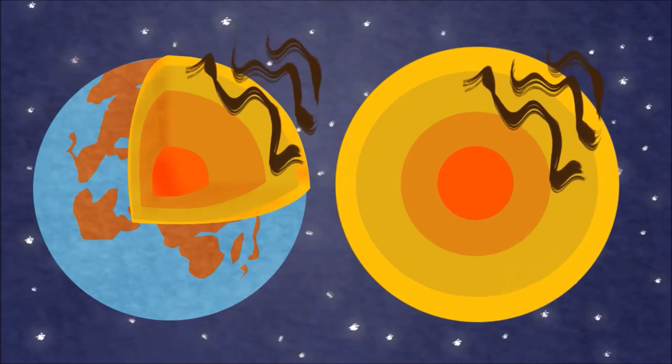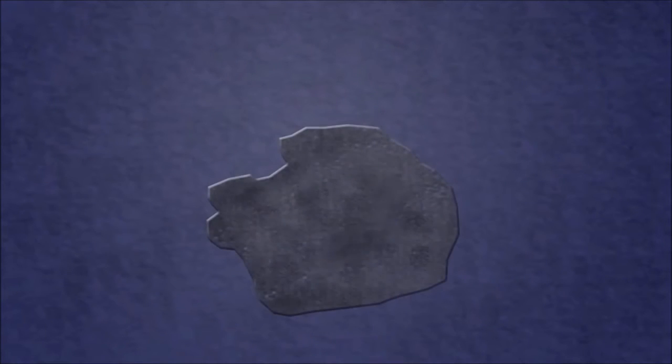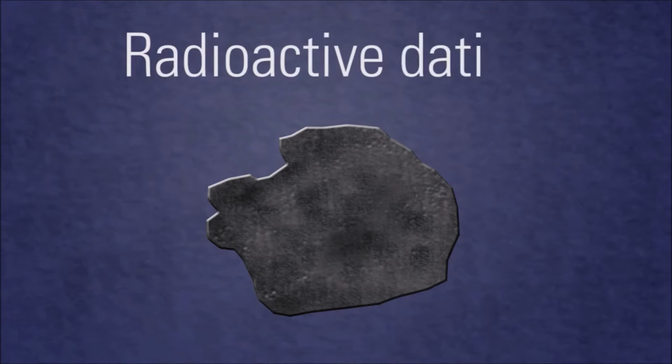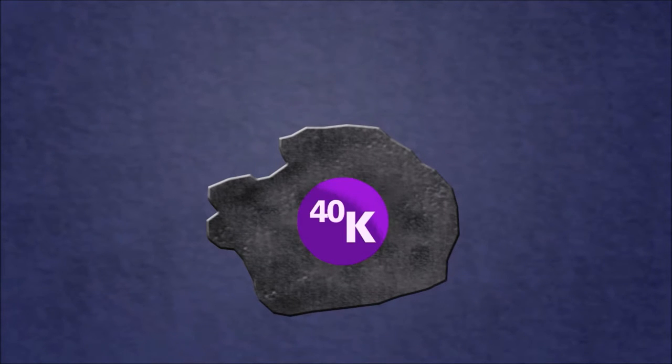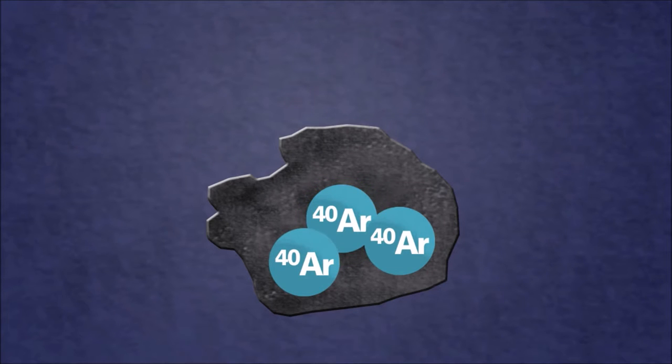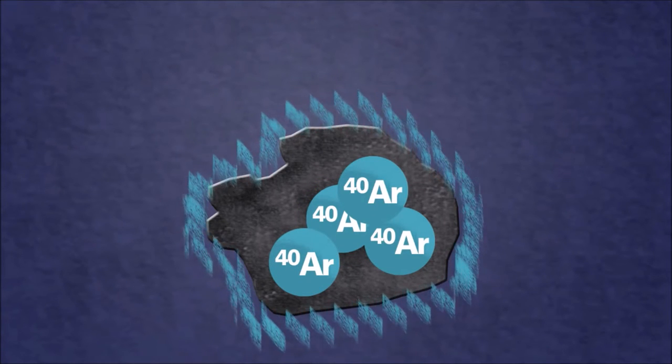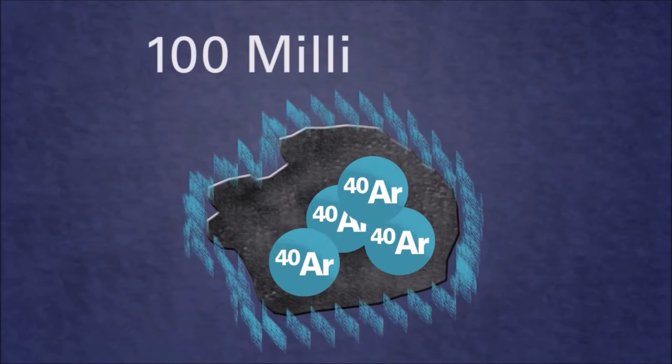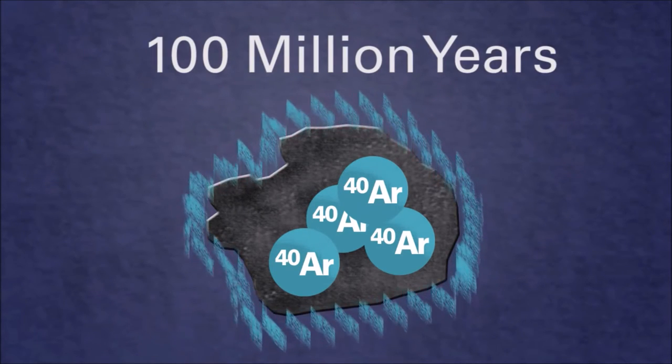The age of rocks is determined mainly through radioactive dating. When a radioactive element, such as potassium-40, undergoes radioactive decay, a decay product is formed, in this case argon-40, which builds up in the rock once the rock solidifies. Using the half-life of the element, in this case 100 million years, we can estimate the age when the rock solidified.